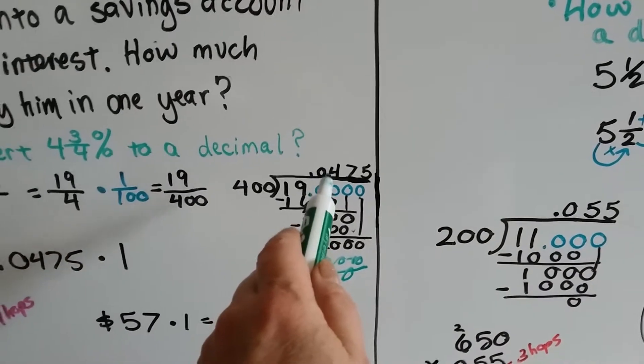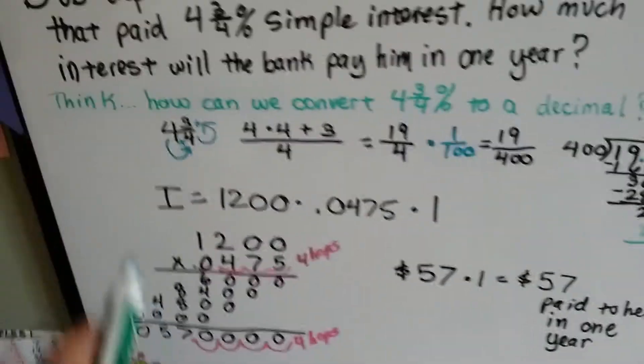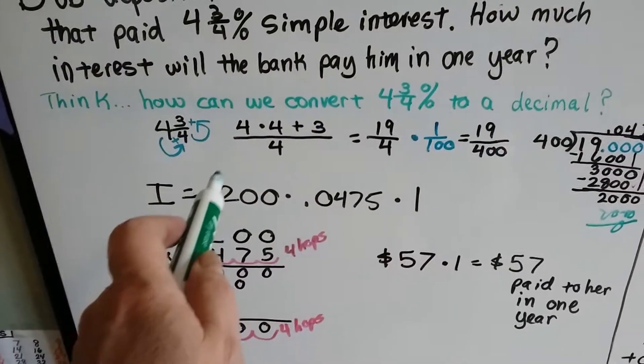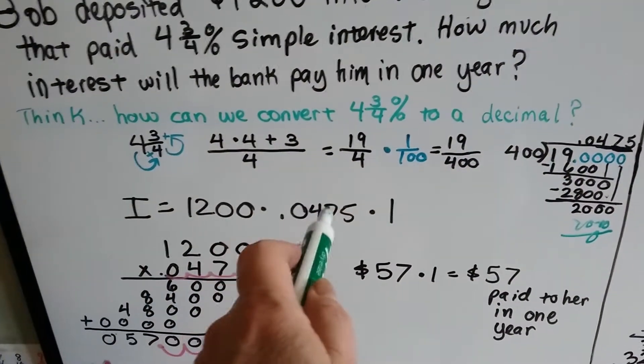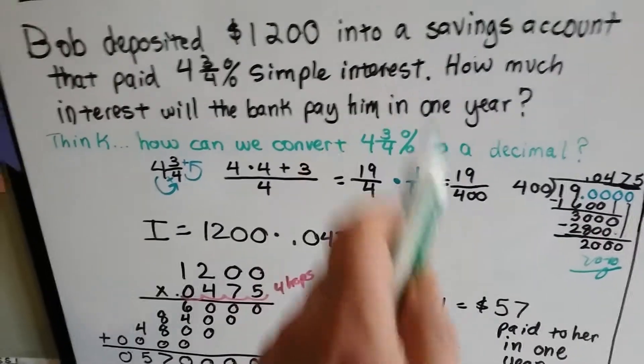Now that we're down to a zero, we know that the answer is .0475. We plug that into our formula and we've got 1200 times .0475 times the one year.